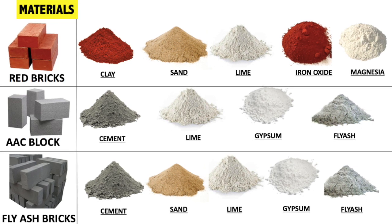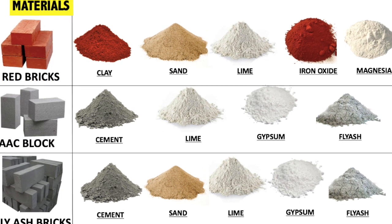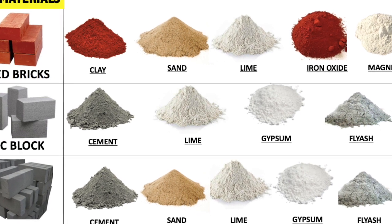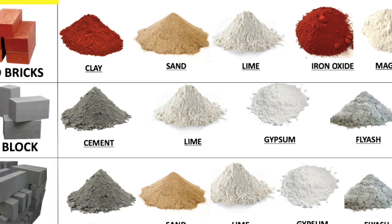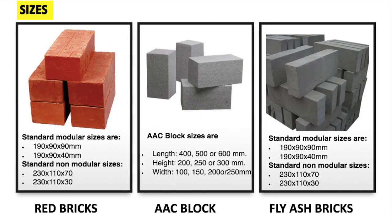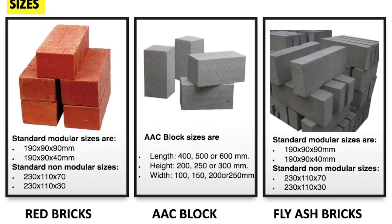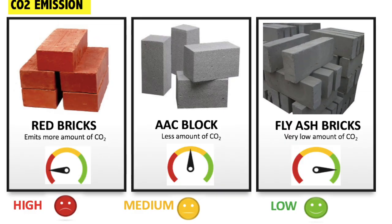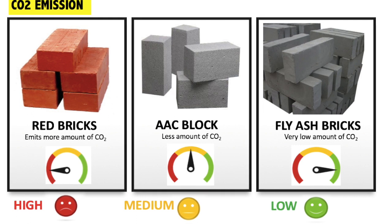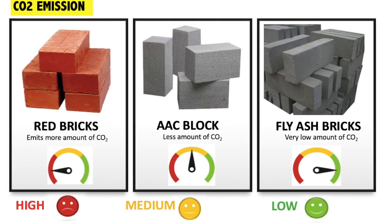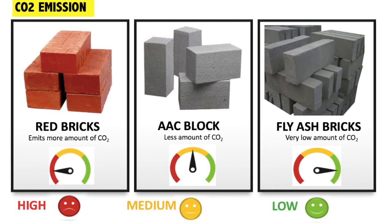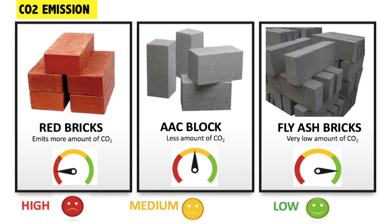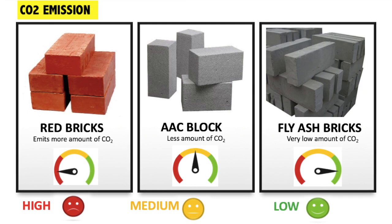AAC blocks are made from the mixture of cement, lime, gypsum, a little amount of fly ash and an aeration agent. AAC block waste is recycled and used again during the manufacturing process. AAC blocks are comparatively lighter in weight and stronger than common clay bricks and fly ash bricks. In AAC block, less amount of carbon dioxide is emitted in the atmosphere during the manufacturing process. Fly ash bricks are made from the mixture of fly ash, cement, sand, lime and gypsum. Fly ash bricks utilize fly ash waste which is generated from thermal power plants, thus helping solve the disposal problem. In fly ash bricks, very low amount of carbon dioxide is emitted during the manufacturing process.